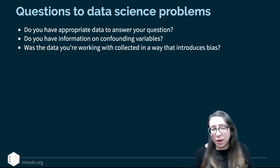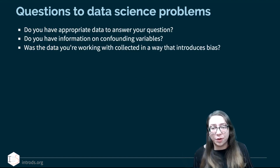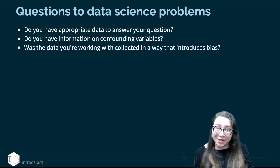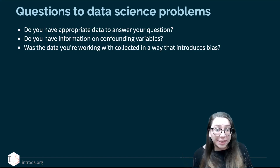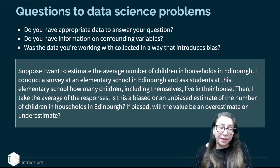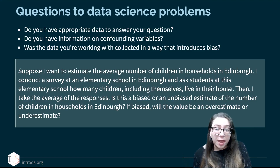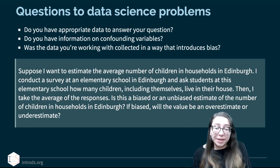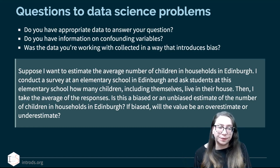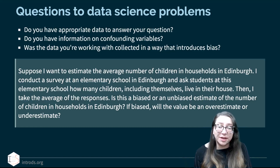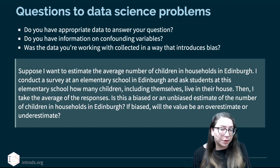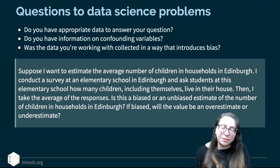When you have a data science problem, there are a few questions you want to ask: Do you have appropriate data to answer your question? Do you have information on confounding variables? Was the data collected in a way that introduces bias? For example: suppose I want to estimate the average number of children in households in Edinburgh. I conduct a survey at an elementary school and ask students how many children, including themselves, live in the house. Then I take the average. Is this a biased or unbiased estimate, and if biased, will it be an overestimate or underestimate?